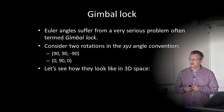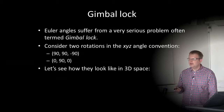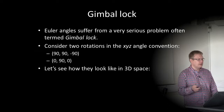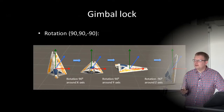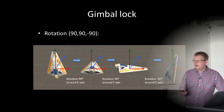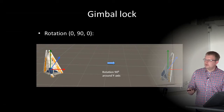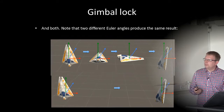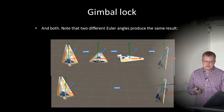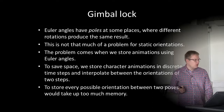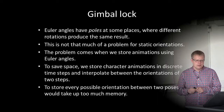Consider two rotations in the X, Y, Z angle convention: (90, 90, -90) and (0, 90, 0). Taking our spaceship example: the first rotation (90, 90, -90) — we rotate 90 degrees around X, then 90 degrees around Y, then minus 90 around Z — produces a certain result. The rotation (0, 90, 0) produces the same final result. So Euler angles have poles at some places where different rotations produce the same result.